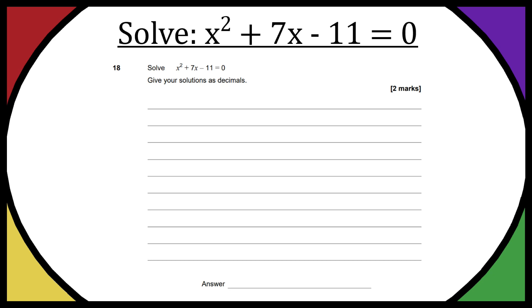We have past paper question number 18 here and we need to solve x² + 7x - 11 = 0. We need to give our solutions as decimals.